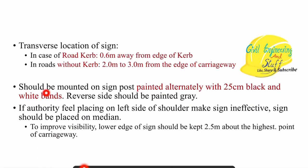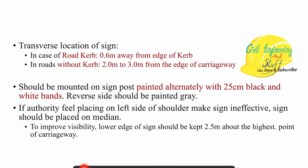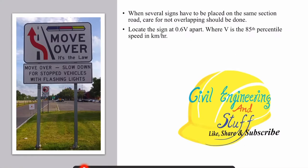The traffic sign should be mounted on a pole colored with alternate black and white bands. The reason for mounting on an alternating color pattern is to have better visibility. The ultimate aim is to ensure that the sign is visible. If at some point it is observed that the traffic sign is not visible through a safe distance following these provisions, modification can be done by the planner in charge.